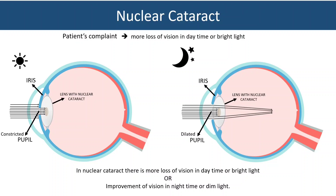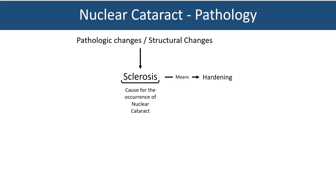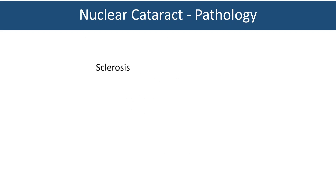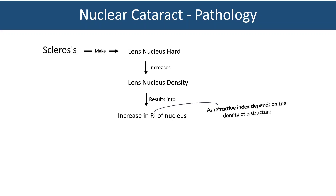In nuclear cataract, there is more loss of vision in daytime or bright light, and improvement in vision in nighttime or dim light. The pathological change responsible is sclerosis, meaning hardening of the lens nucleus — which is why nuclear cataract is also called hard cataract. Sclerosis makes the lens nucleus hard, increasing its density and thus its refractive index, which results in an increase in the converging power of the lens.